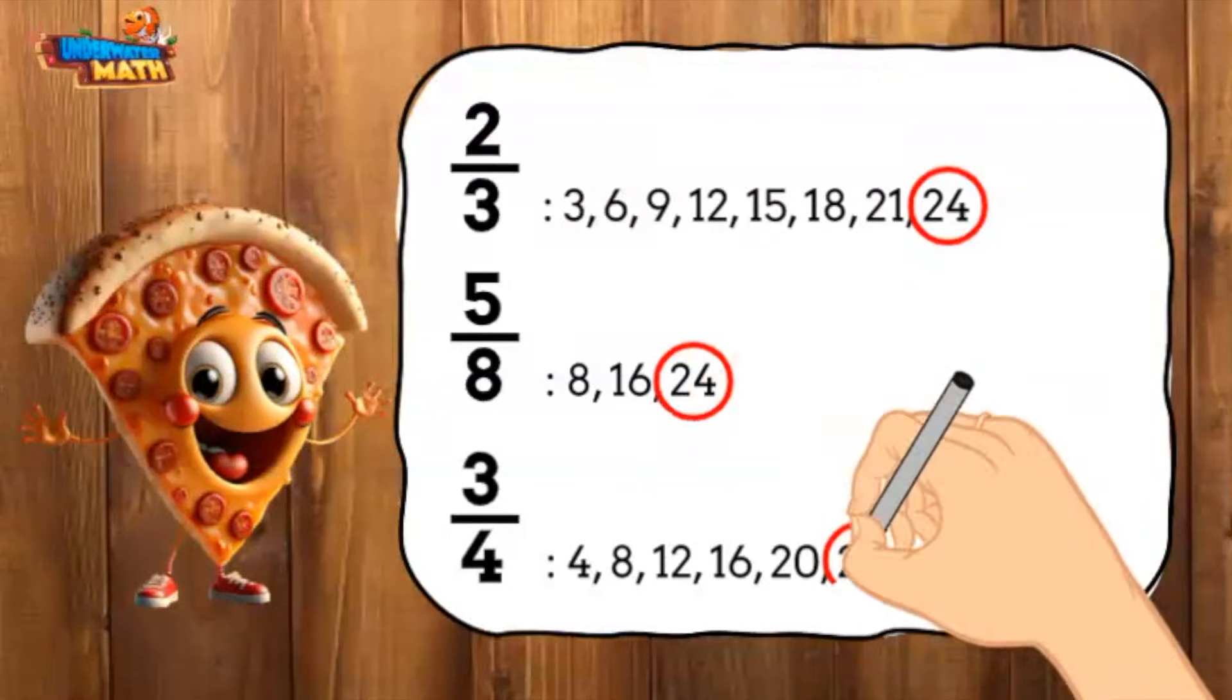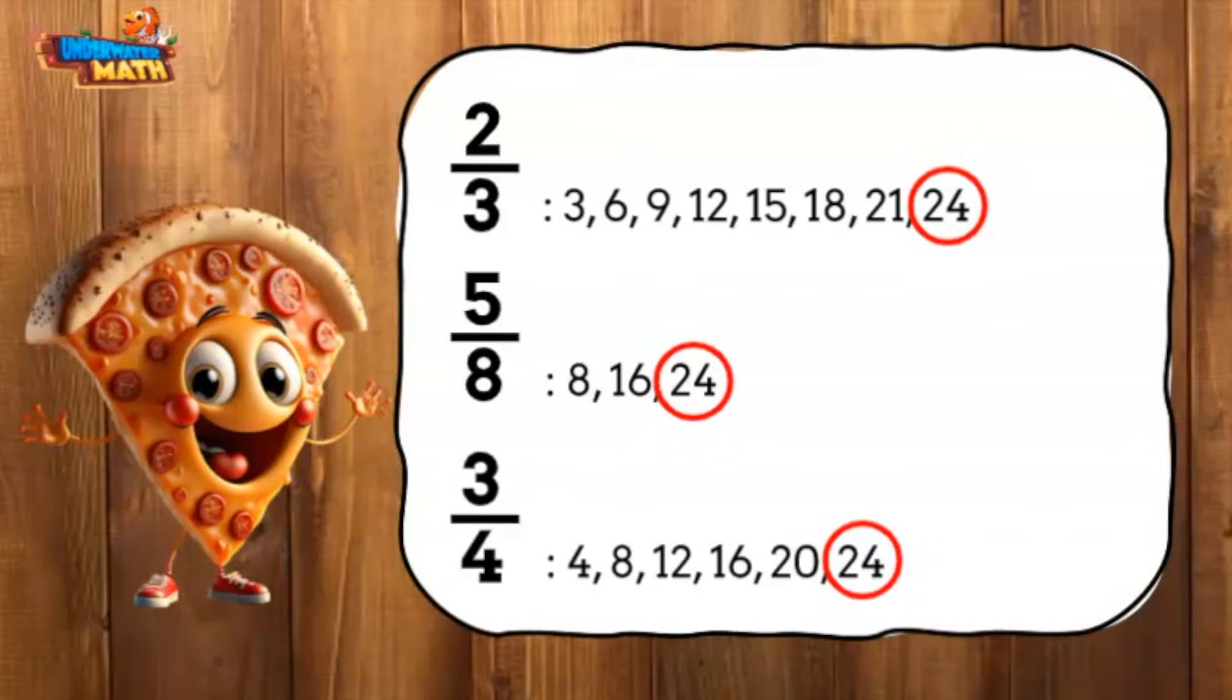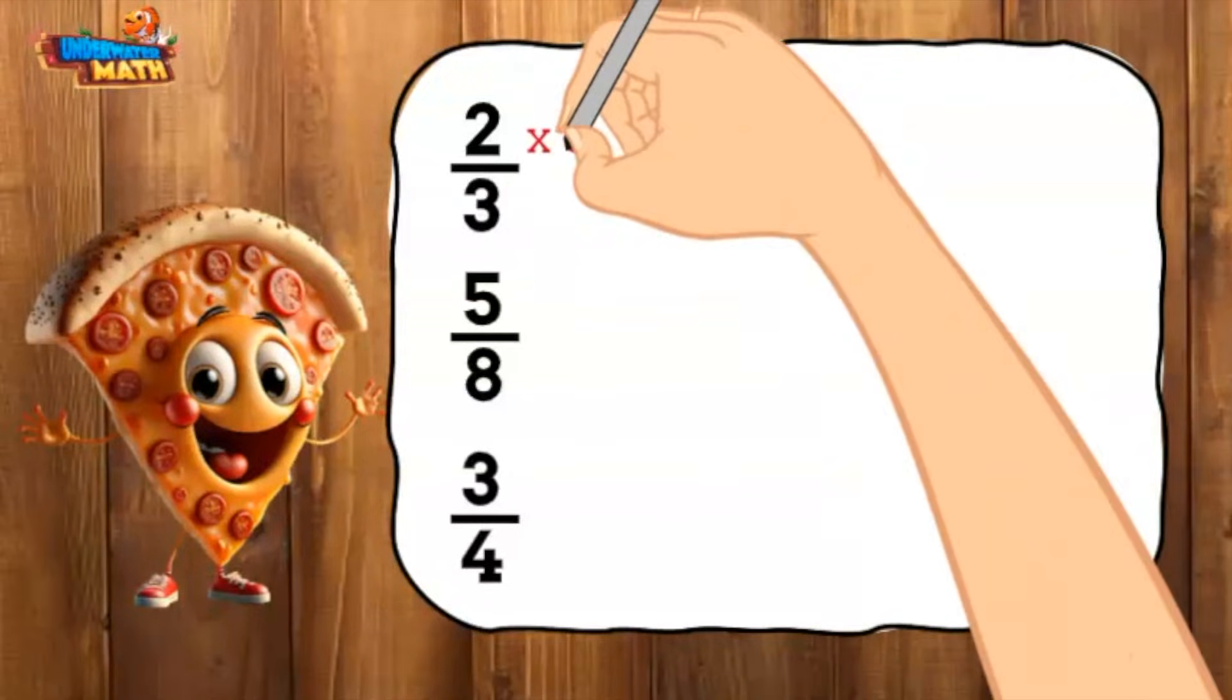24 is the smallest number in all the lists, so 24 is our common denominator. We can now rewrite the fractions using the common denominator.